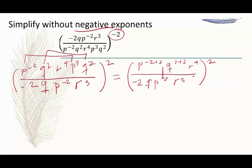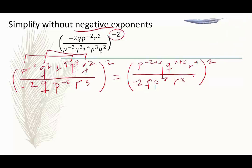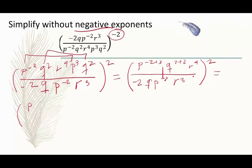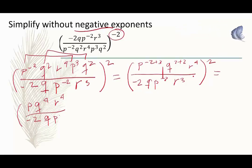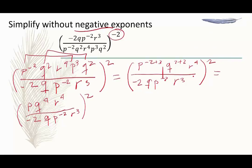On the bottom there's no repetition, so no more simplification there. Putting it all together, I get p to the first power, or just p, q to the 4th, r to the 4th, all over negative 2, q, p to the negative 2, r cubed. And all of this is squared.